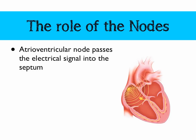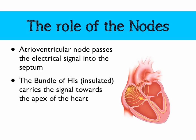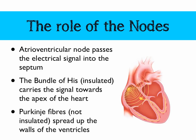From there, the atrioventricular node comes into play — it's the small blob on the diagram near the atrioventricular valve. Its role is to pass the electrical signal into the septum (the middle of the heart), into really well-insulated fibres called the bundle of His. That bundle is insulated so the electrical signal can't get out, and it carries the signal towards the apex — the bottom of the heart. The bundle of His splits, and Purkinje fibres spread up either side of the walls of the ventricles. They're not insulated, so the electrical signal gets out and causes the ventricles to contract from the bottom upwards, forcing blood out through the semilunar valves.